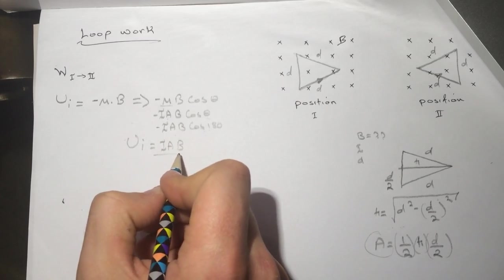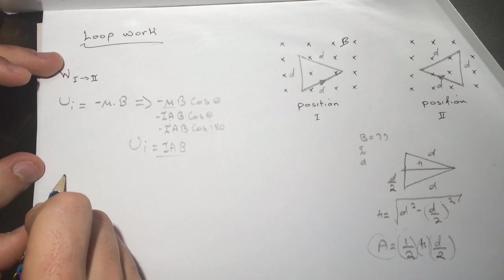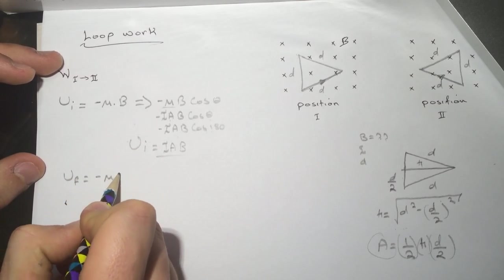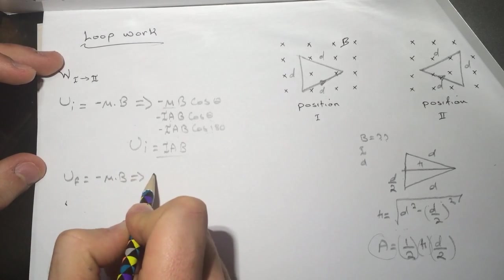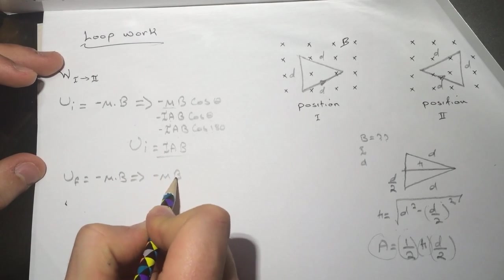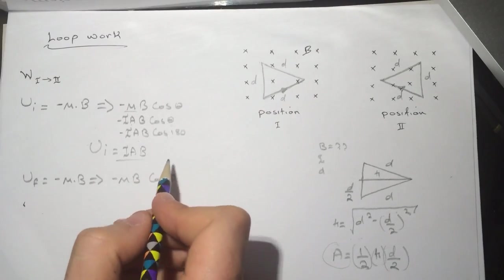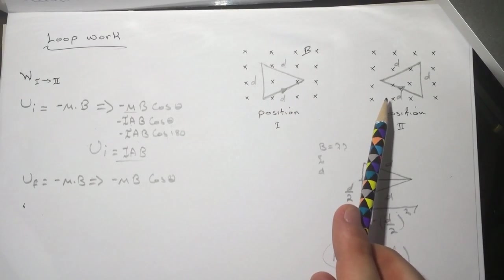For the U final, it's the same: minus μ dot B, which is minus μ times B times the cosine of theta. Let's look at the theta here.